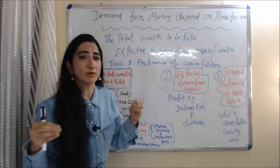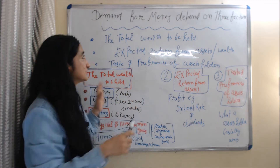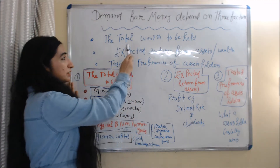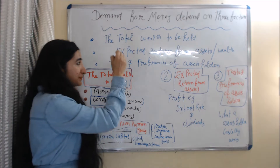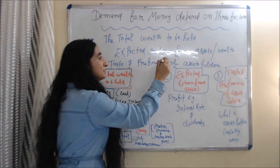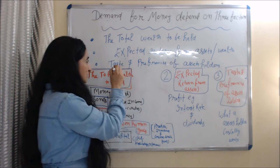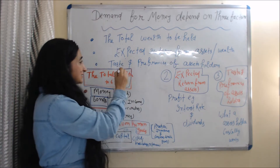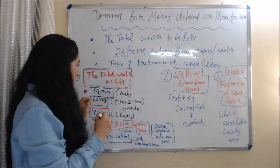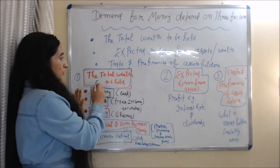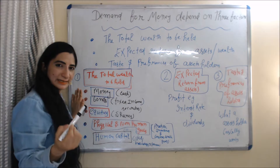According to this theory, demand for money depends on three factors: first is the total wealth to be held, second is the expected return from assets or wealth, and third is the taste and preference of the asset holder.